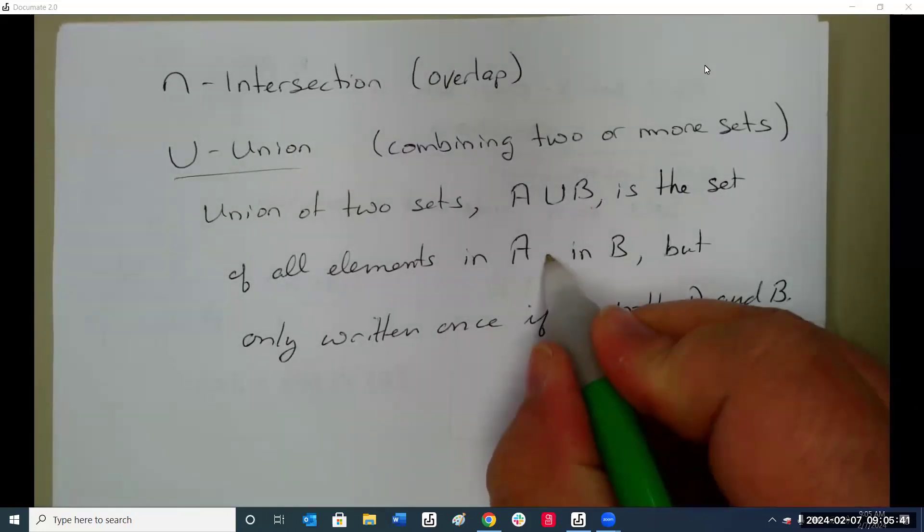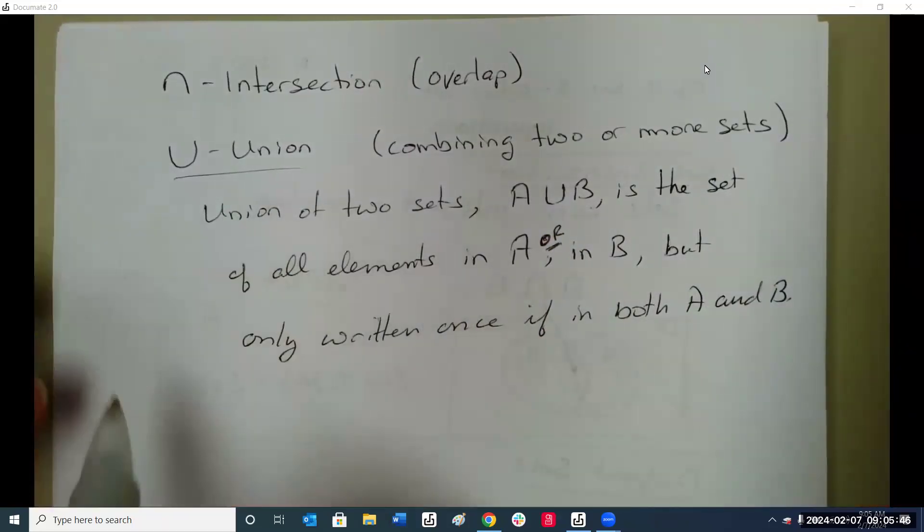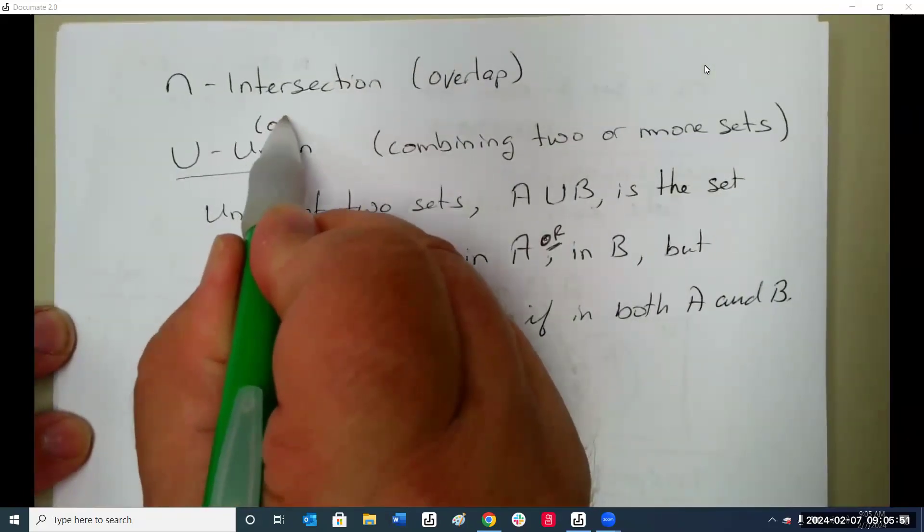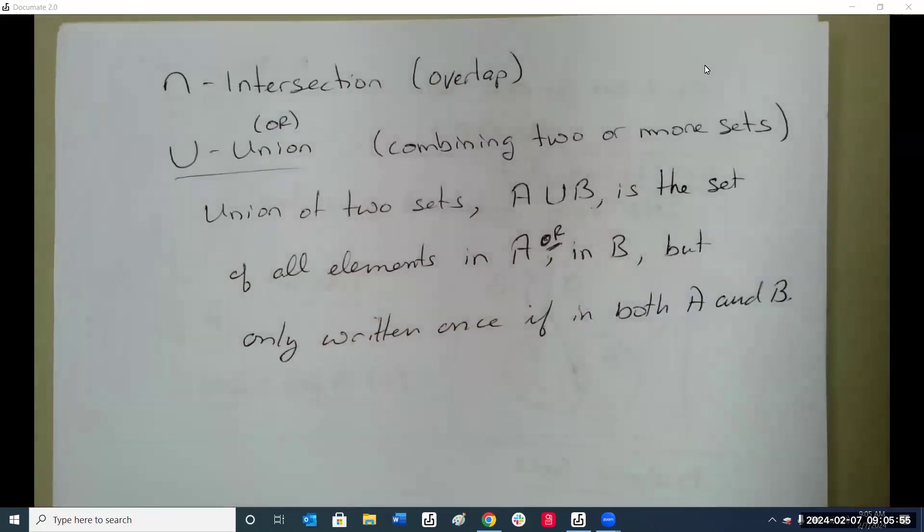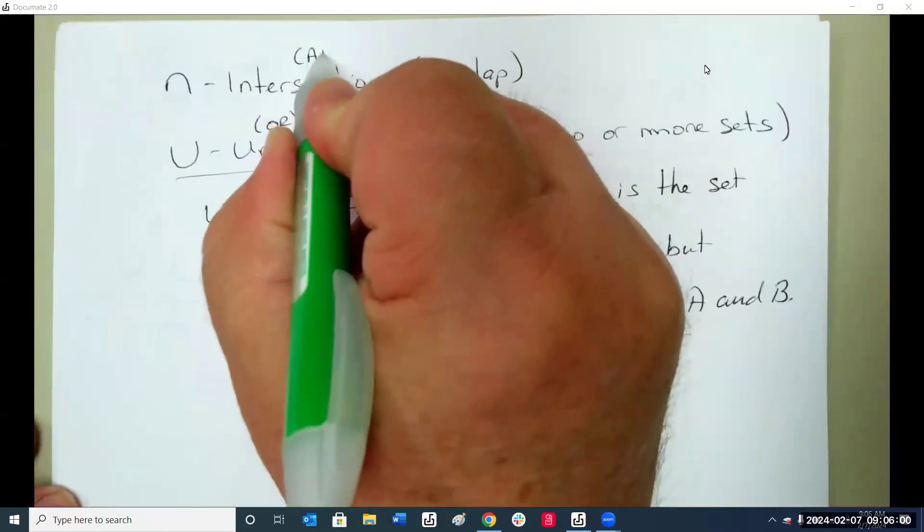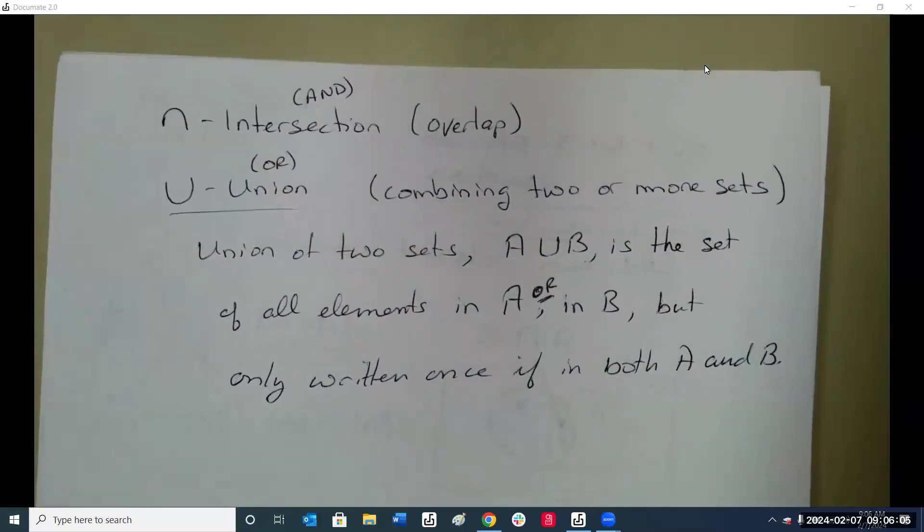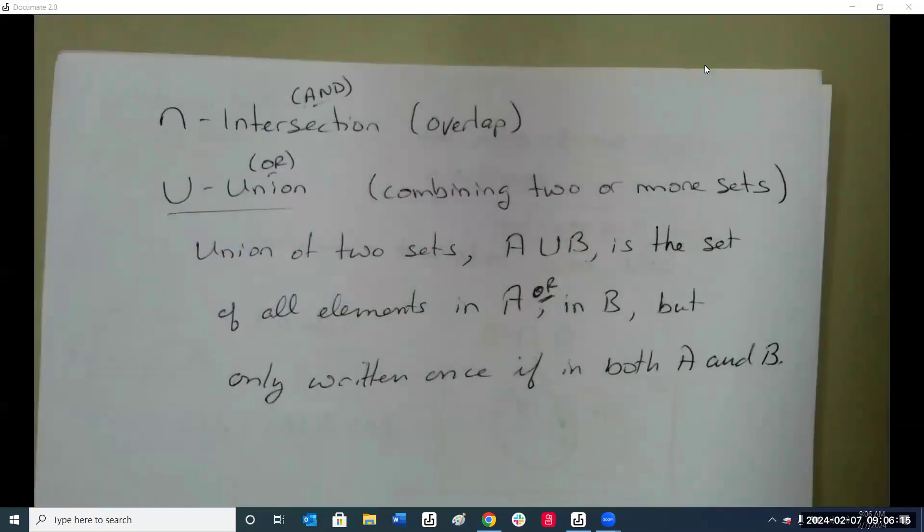Actually I should put the word 'or' in here because the union symbol is, in logic, it's the or operation. Think about it, it's either going to be in here or it's in here. The intersection is the 'and'. In order for the intersection to work, it has to be in A and it has to be in B. So whenever you see those words in statements you know whether it's an intersection or a union they're looking for.